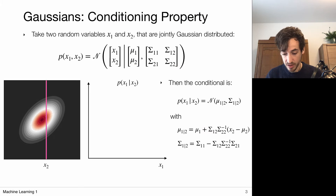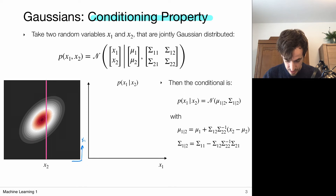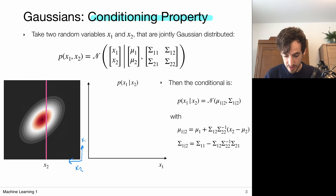Let's move on to a second important property: the conditioning property. Again, I have two random variables that are jointly Gaussian distributed according to this multivariate Gaussian distribution. If I look at the conditional distribution for x1 given x2 — with x1 on one axis and x2 on the other — I fix a particular value of x2 and then look at what probability x1 has. Drawing that out, I obtain a distribution that represents the probability for x1 given x2.